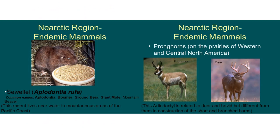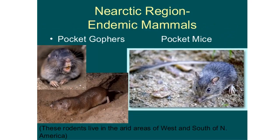Here you can see pictures of some endemic mammals — the squirrel and pronghorn. These two mammals are endemic to this region. Endemic animals are those species found only in a particular geographic region because of isolation, soil, and climatic conditions. Pocket gophers and pocket mice are also endemic to this region.